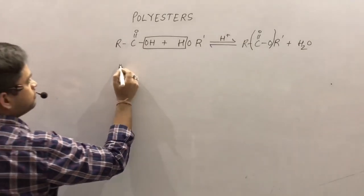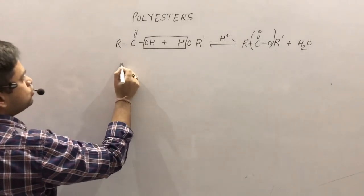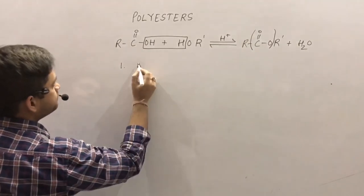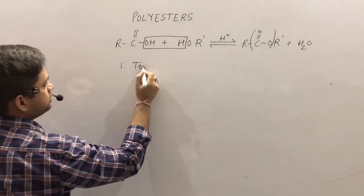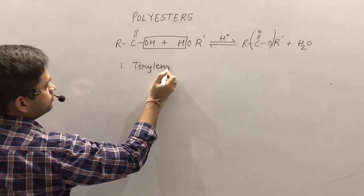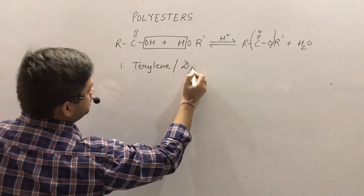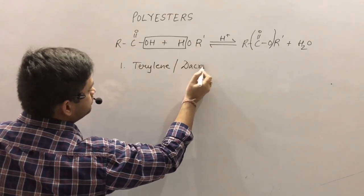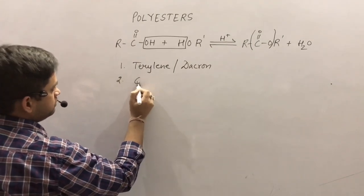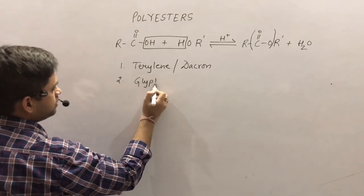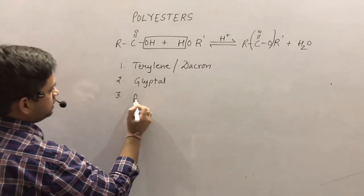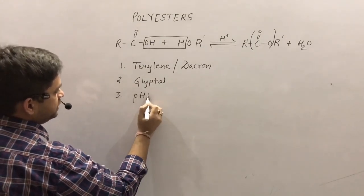We have three polyesters to cover: first is Terylene, also known as Dacron; second is Glyptol; and the third one is PHBV.